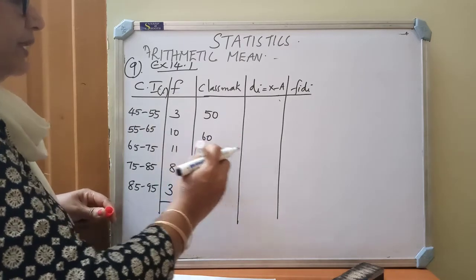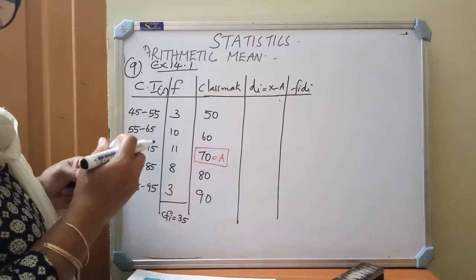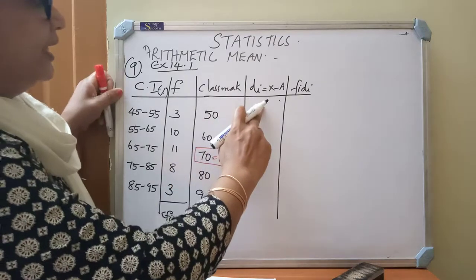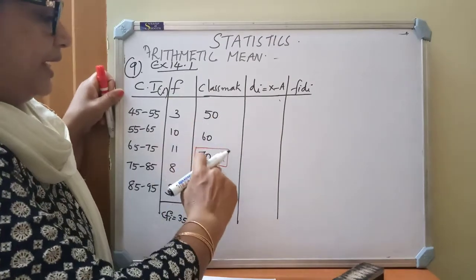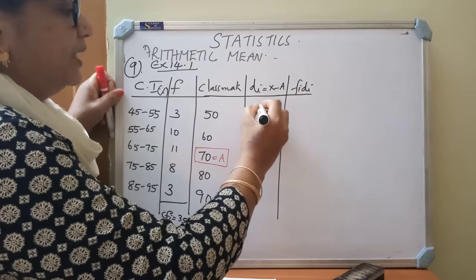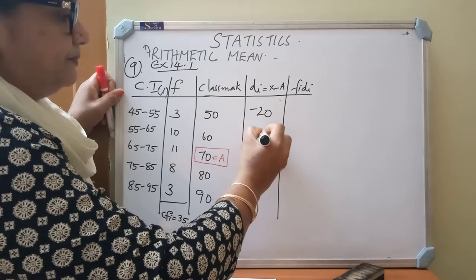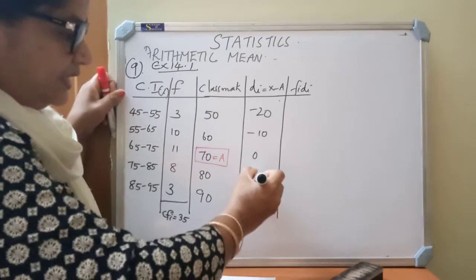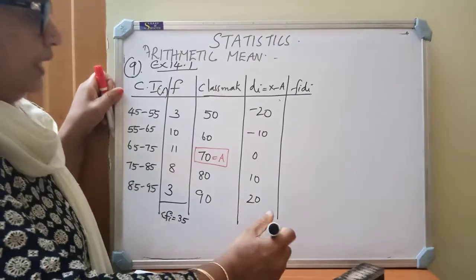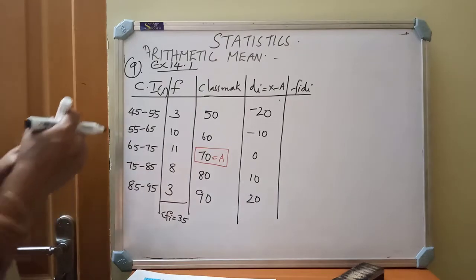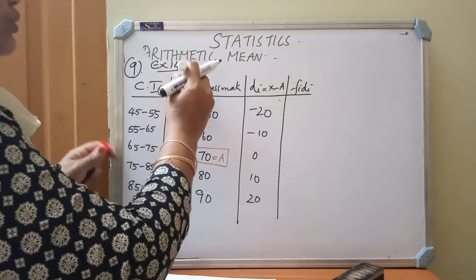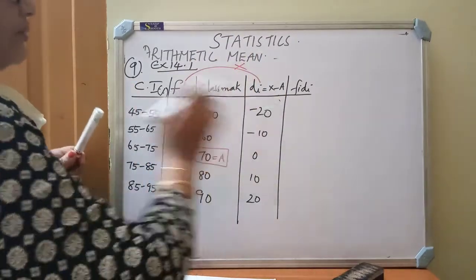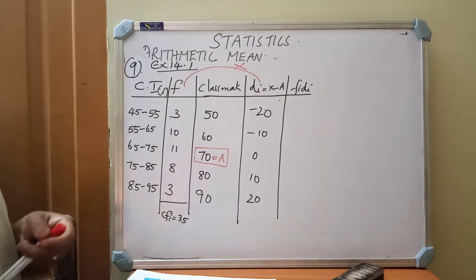Second method only I am doing here. Assumed mean method. Because assumed mean method calculations are very simple. Here DI equal to X minus A. A is 70. 50 minus 70 is minus 20. Minus 10. Then 70 minus 70 is 0. 80 minus 70 is 10. 90 minus 70 is 20. Then what we have to do. FYDI. This is our F value. This is our DI value. Draw an arc like that and put multiplication. These two columns we are multiplying. 3 into minus 20 is minus 60. Minus 100.